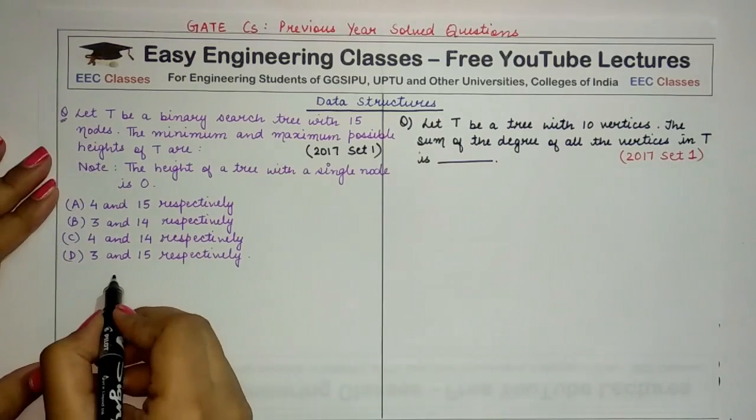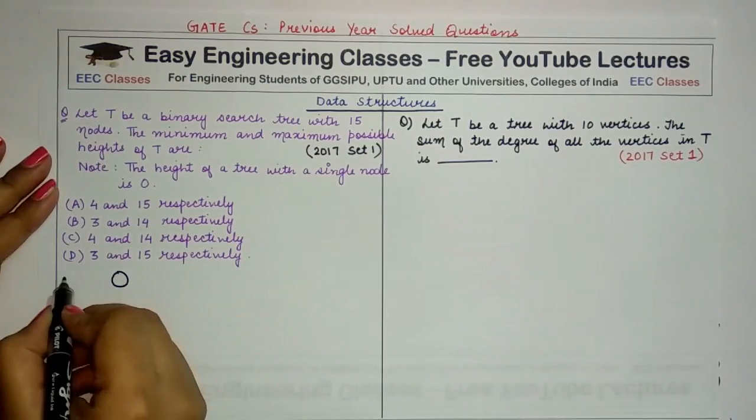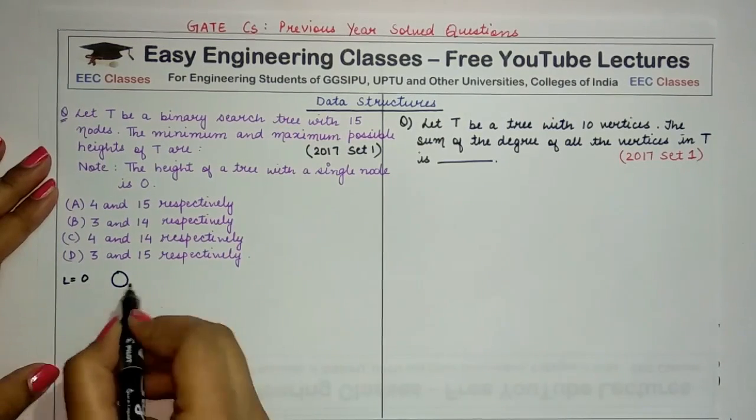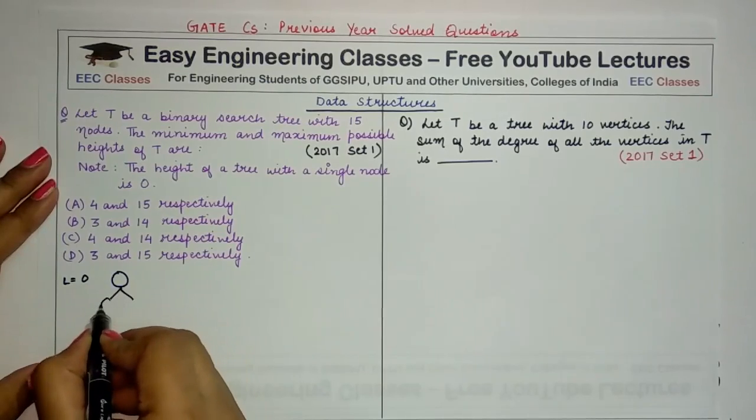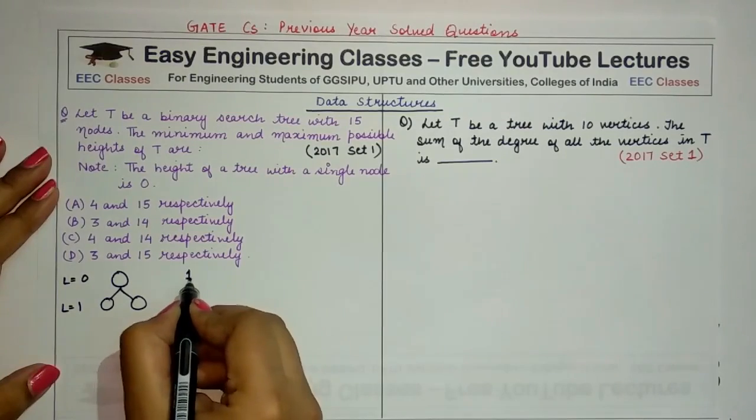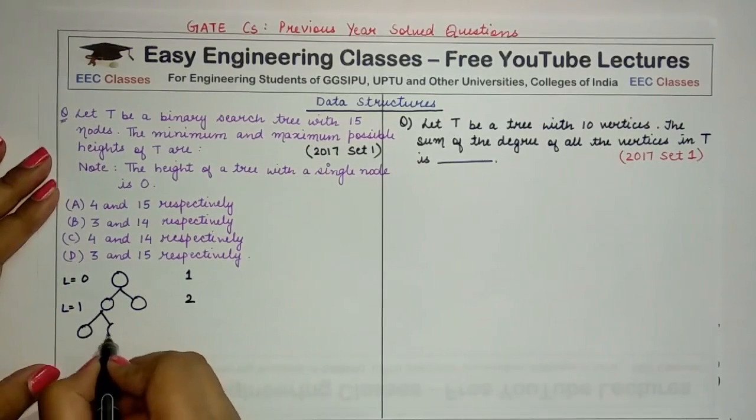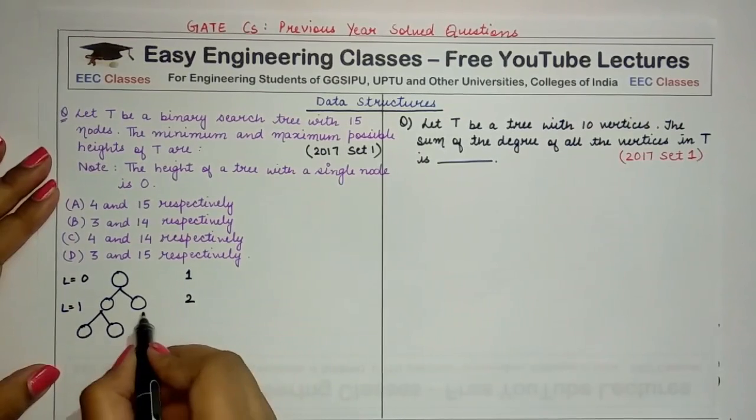If we start drawing a binary tree, then at level 0 we'll have one node, then at the next level maximum number of nodes that are possible are two. It becomes level 1, so this is one node, this is two nodes. Then at the next level, if we have to achieve the minimum height, we have to completely fill the tree at each level. We have a total of four nodes.